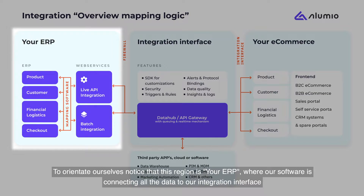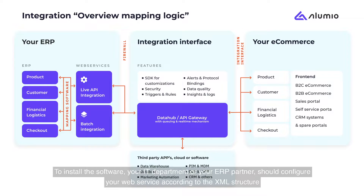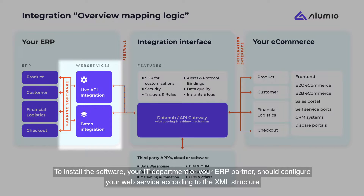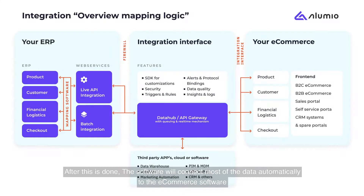To orientate ourselves, notice that this region is your ERP where our software is connecting all the data to our integration interface. To install the software, your IT department or your ERP partner should configure your web service according to the XML structure as defined in our detailed mapping documentation paper. After this is done, the software will connect most of the data automatically to the e-commerce software.